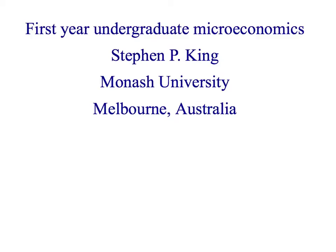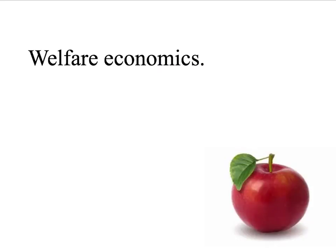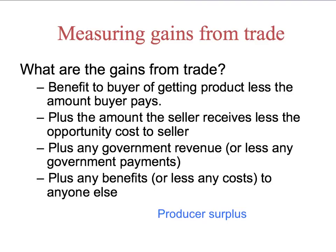Hi, and welcome back once more to First Year Undergraduate Microeconomics. The topic is welfare economics, and we've been looking at producer surplus. What is it? It's the amount that a seller receives, less the opportunity cost of a seller.